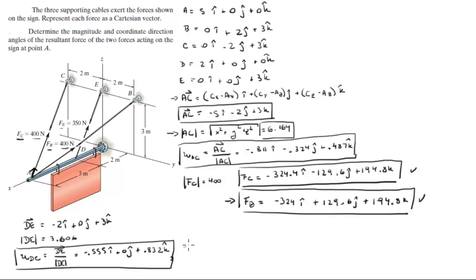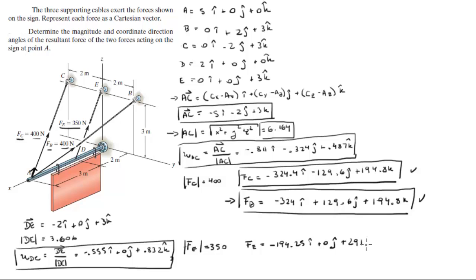Since the magnitude of FE is given as 350, FE equals −194.25i + 0j + 291.2k. Now we have all three forces acting on the pole in Cartesian vector form.